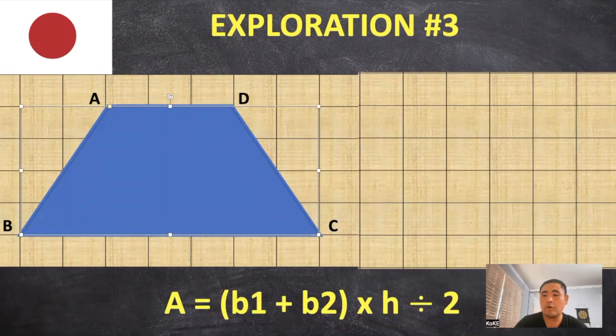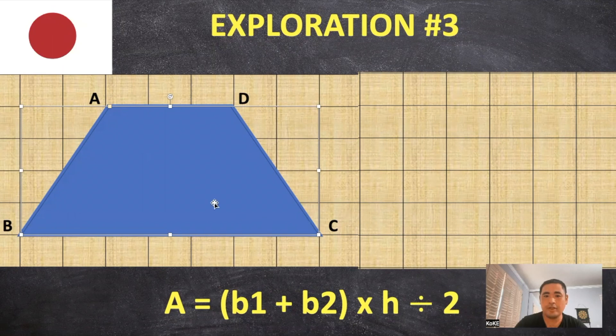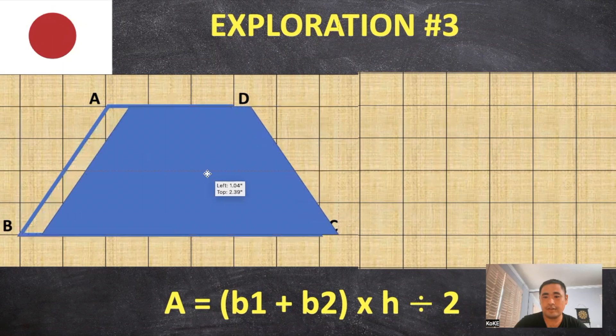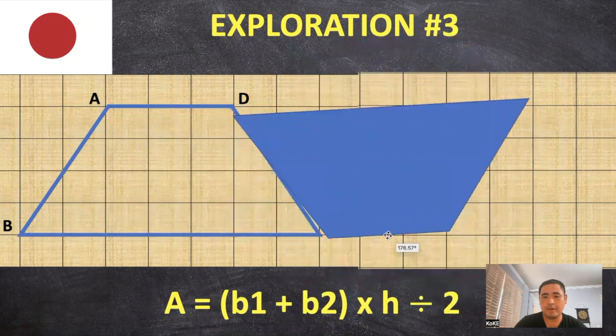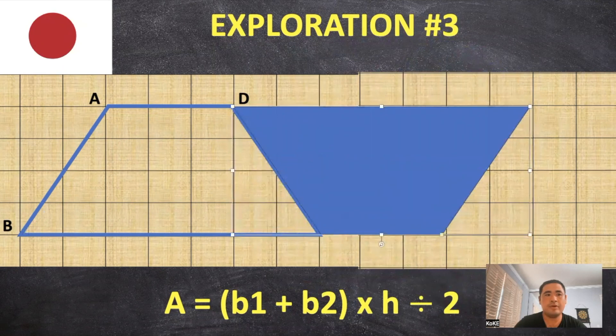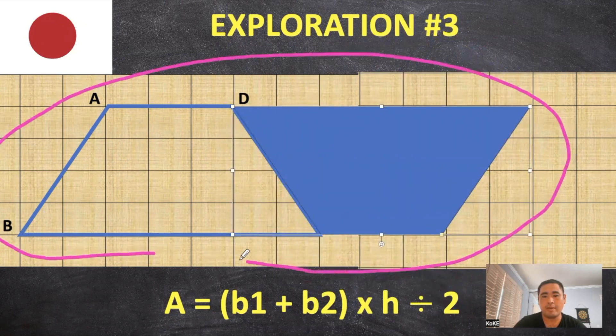And finally, why flip half of the trapezoid when you can flip the entire trapezoid? So if you take this out right here, and once again flip it over, you end up with one big parallelogram right here.